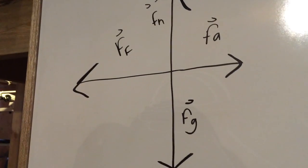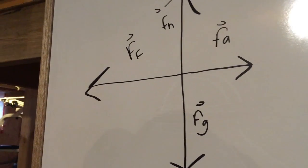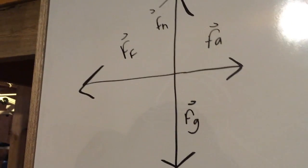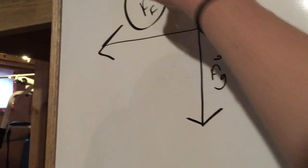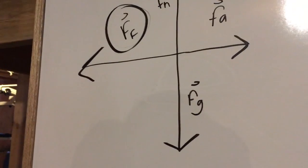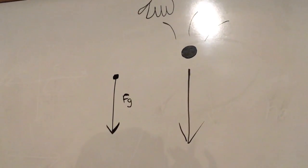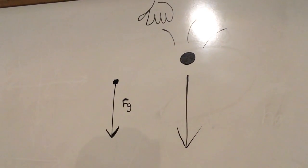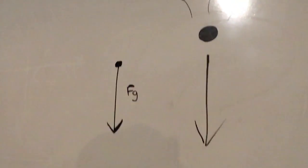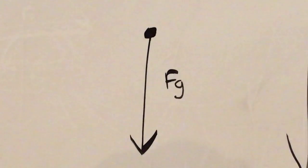This is due to thermal energy, or to refer to our forces unit, it would be called friction. My second example will be an unbalanced net force in the y direction.